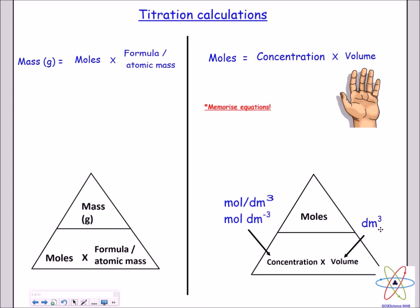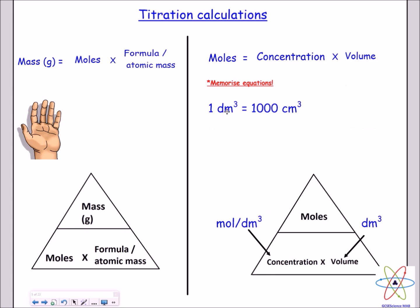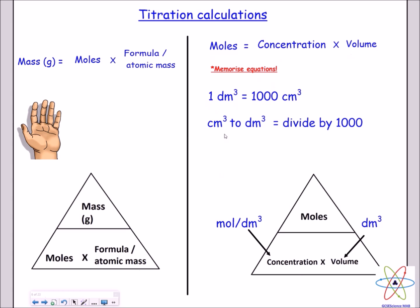The volume is in decimetre cubed. One decimetre cubed is equivalent to 1000 centimetres cubed. To convert centimetres cubed to decimetre cubed, you simply divide the number by 1000. For example, 20 centimetres cubed divided by 1000 gives 0.02 decimetres cubed.